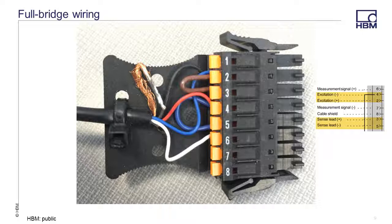Here is a close-up of a full-bridge sensor connected to a MX1615B connector. The sensor being used is only a four-wire bridge. Thus, you will notice that the sense leads are jumpered to the excitation leads. Sense plus goes to excitation plus and sense minus goes to excitation minus. If you do not jumper these connections when using a four-wire full-bridge sensor, the amplifier will give an overflow condition.